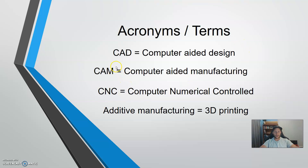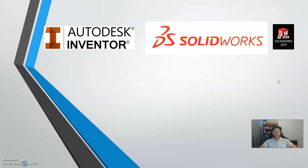CAM is another word you'll use in conjunction with CAD — it stands for computer aided manufacturing, so we can take our designs and manufacture them using a computer. CNC ties into CAM in that it is computer numerical control, so we can use computers to control machines to manufacture our designs. You'll also see the term additive manufacturing used a lot, which relates to things like 3D printing and other technologies common and available to us now.